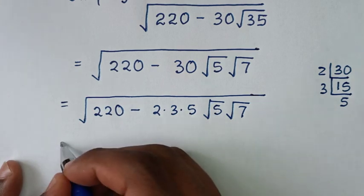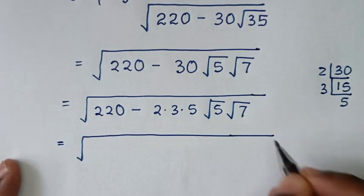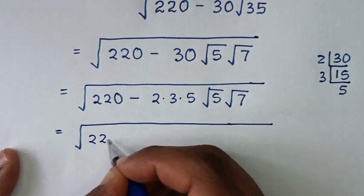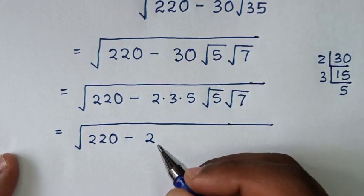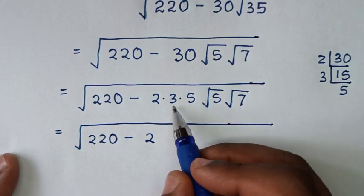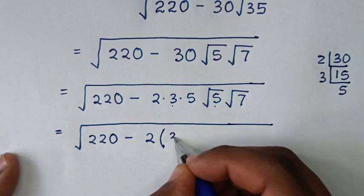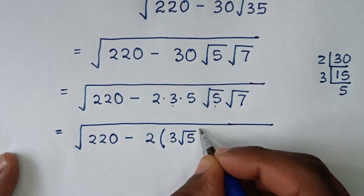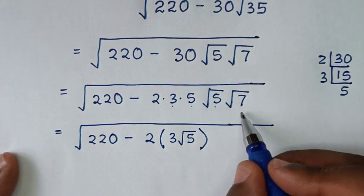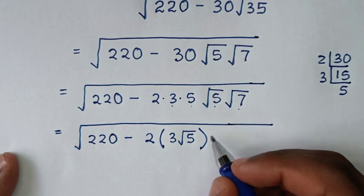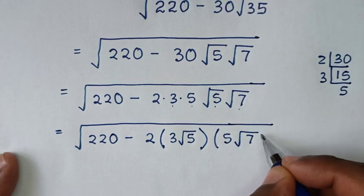In the next step, it will be equal to square root of 220 minus 2. We take 3 and square root of 5 together in a bracket — that is, bracket 3 times square root of 5 bracket — and then 5 times square root of 7 together.